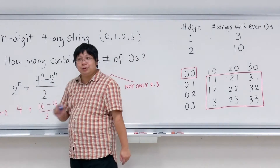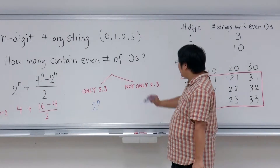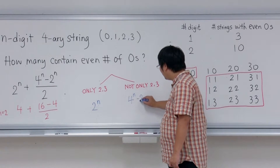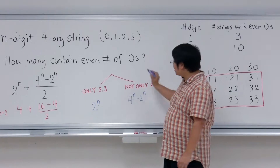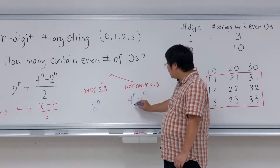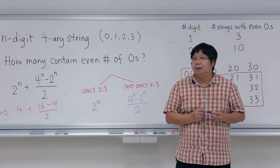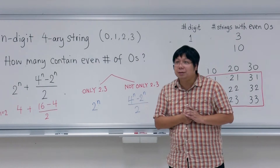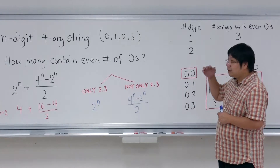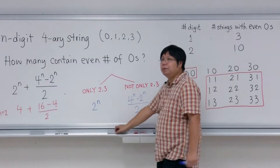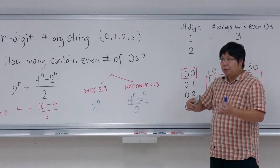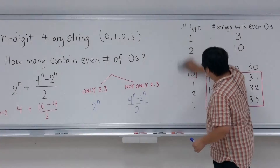This 2^n corresponds to the 2^n term in the formula. How many strings are not just twos and threes? That's 4^n minus 2^n. But this is not the answer yet — we hope to show that out of these 4^n minus 2^n strings, exactly half have even number of zeros.